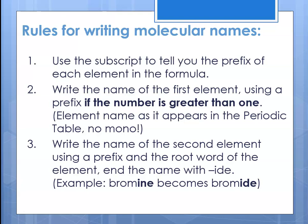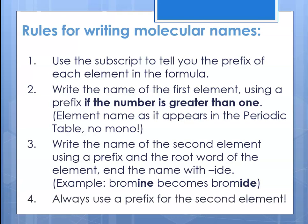The ending is always -ide, so we change the element's name to give it the -ide ending. In chemistry, that -ide ending tells us it's a binary compound. For example, if the second element were bromine, we would change that name to bromide — the root is 'brom,' so it goes from bromine as it appears in the periodic table to bromide to indicate it's a binary compound. Always use a prefix for the second element.